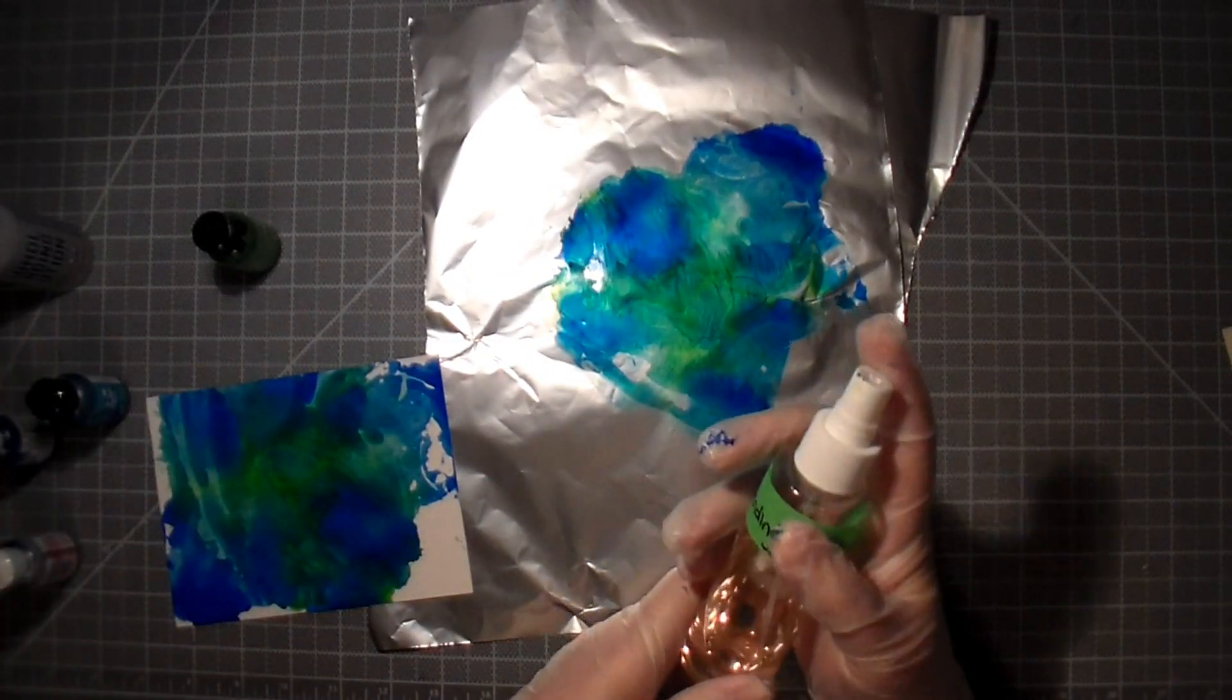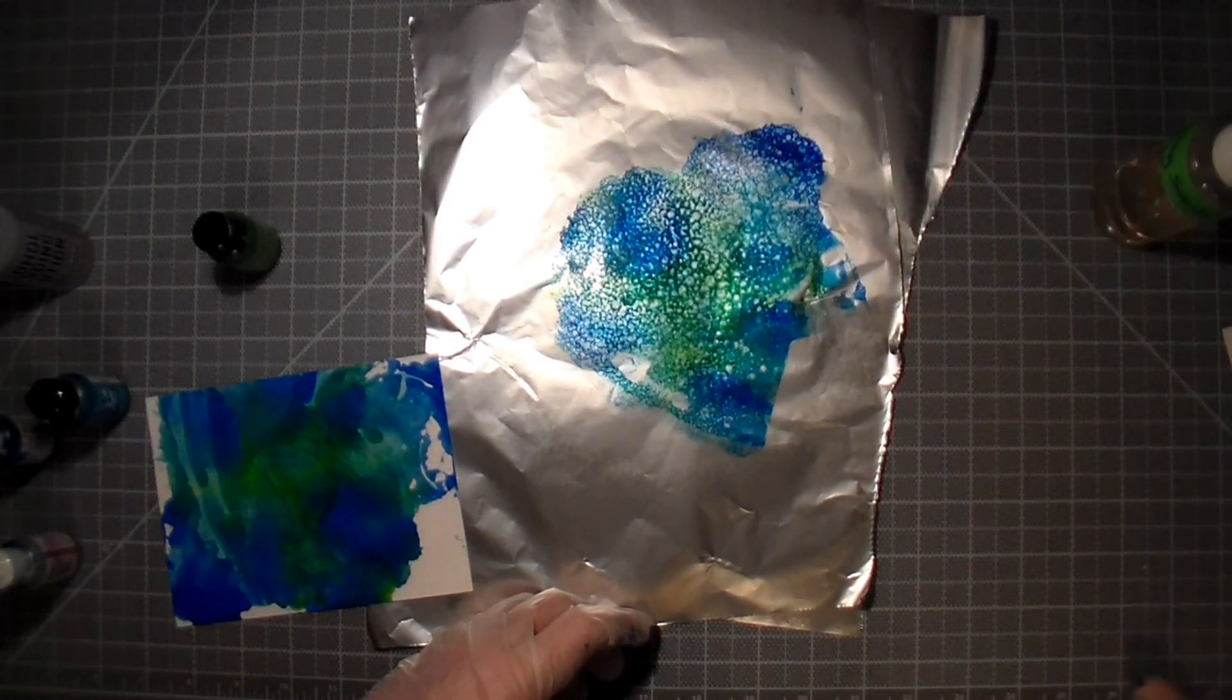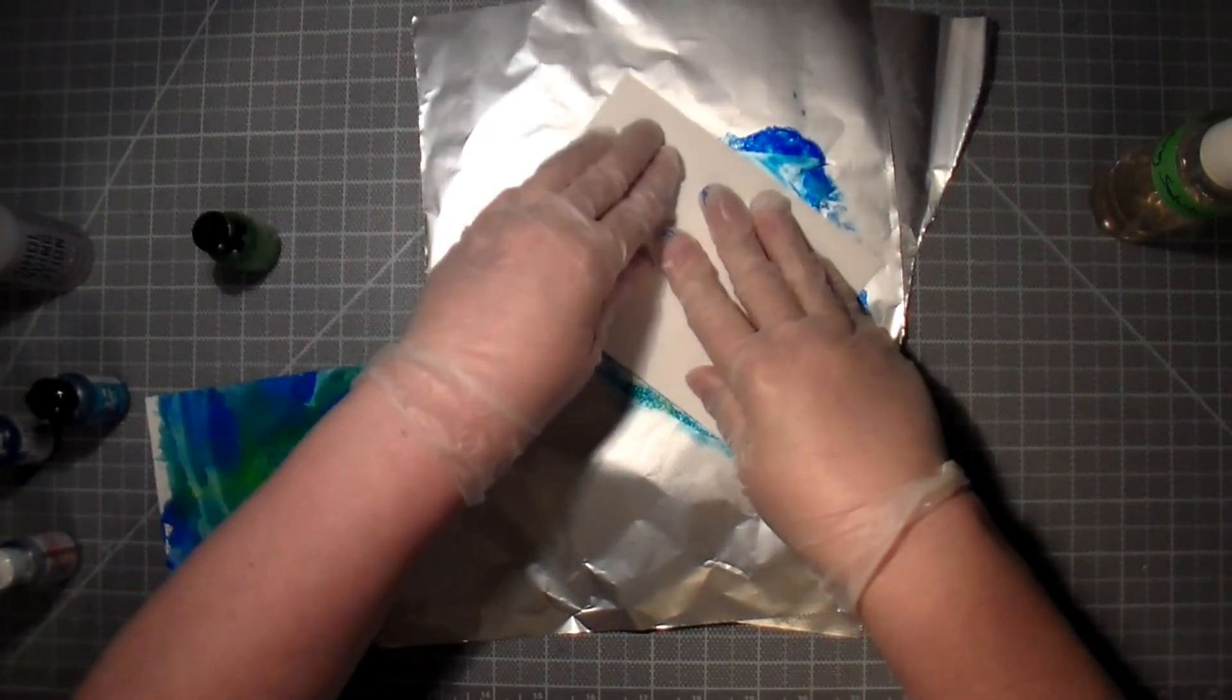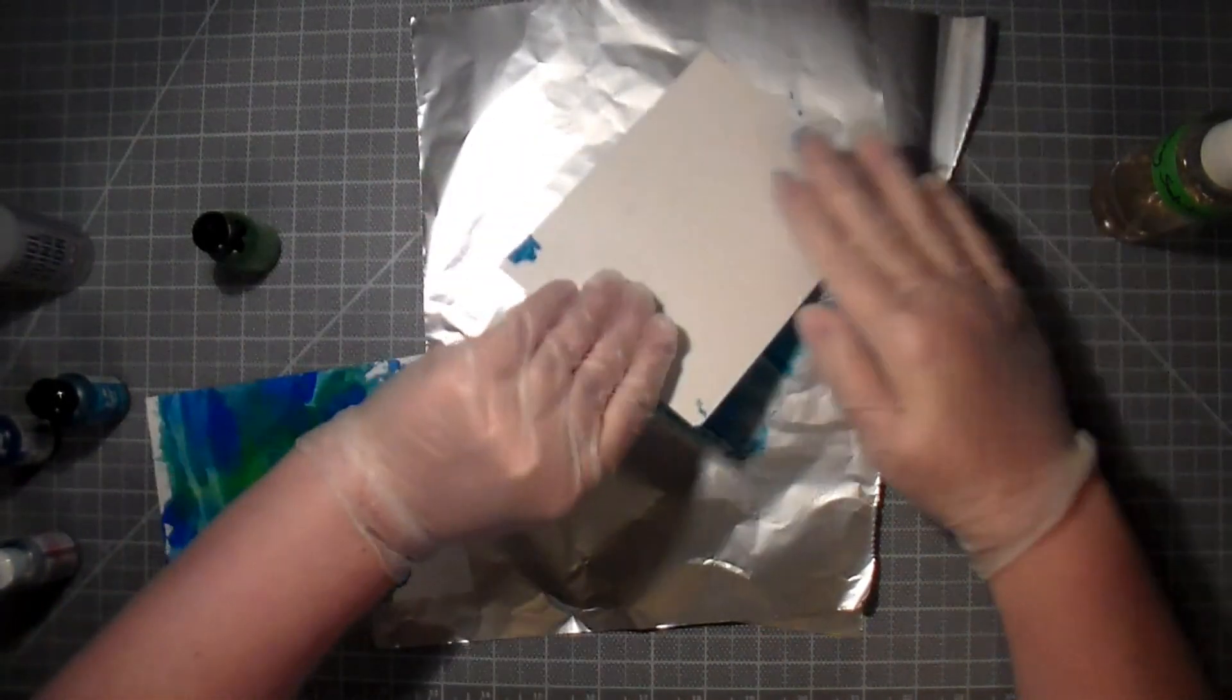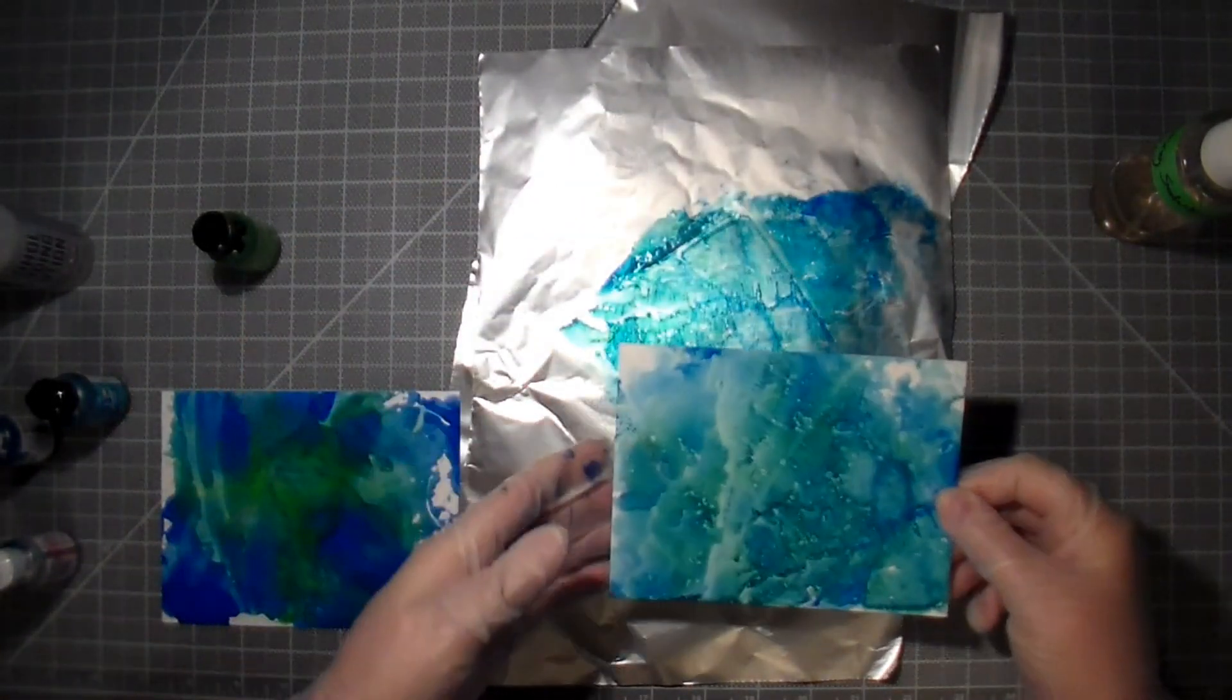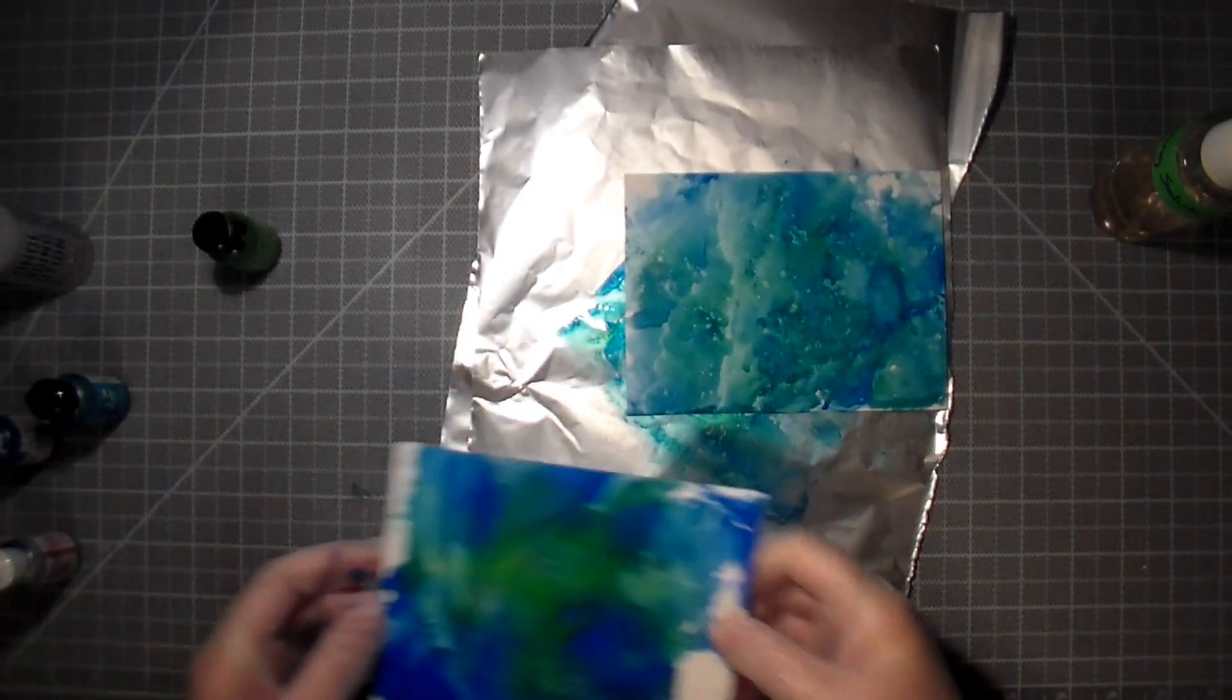So I'm just going to take some of that blending solution in a mister and give a couple of sprays just to reactivate everything, and I'm going to drop in a second piece and smoosh it. Again, this is the Yupo paper, which is a synthetic paper. It's almost like a plastic finish, and the ink just sits on top rather than being absorbed. So I'm just dipping it in, and now I have two beautiful pieces that I can use for backgrounds or for die cuts.